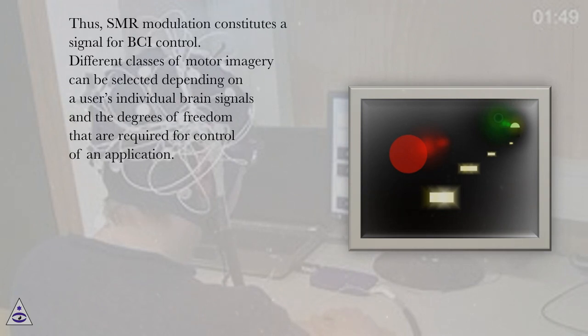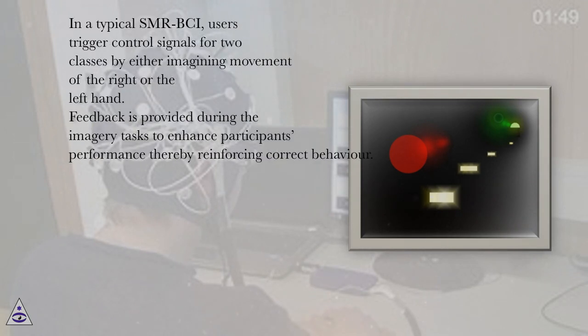Different classes of motor imagery can be selected depending on a user's individual brain signals and the degrees of freedom that are required for control of an application. In a typical SMR-BCI, users trigger control signals for two classes by either imagining movement of the right or the left hand. Feedback is provided during the imagery tasks to enhance participants' performance thereby reinforcing correct behavior.